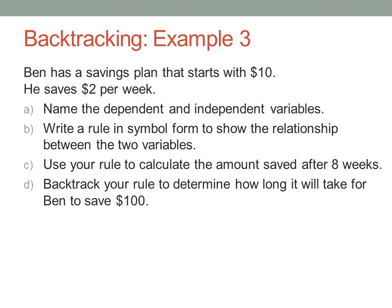For a final example, here's a problem that looks more like a real exam question, with several steps and lots of words. Let's work through it step by step. Ben has a savings plan that starts with ten dollars. He saves two dollars per week. A. Name the dependent and independent variables. B. Write a rule in symbol form to show the relationship between the two variables. C. Use your rule to calculate the amount saved after eight weeks. And D. Backtrack your rule to determine how long it will take for Ben to save one hundred dollars.